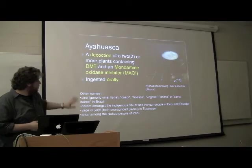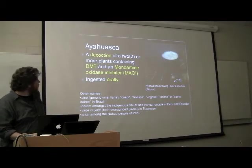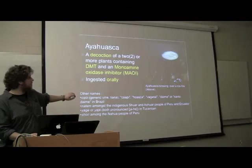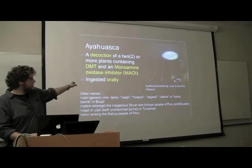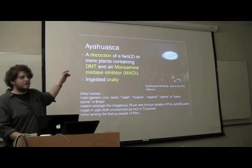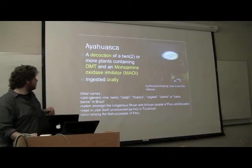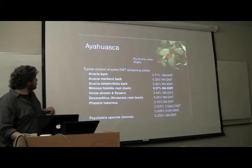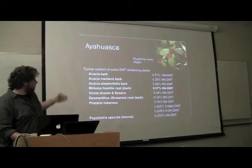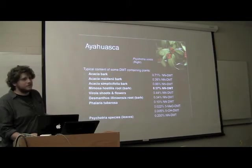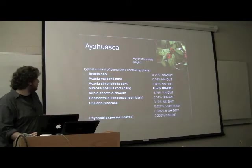These are just some other names for ayahuasca. It's brewed over very low heat — because remember, DMT boils away at around 60 to 80 degrees, very low temperatures. These are just some plants and their DMT content — we're almost getting up to 1% of plant material as DMT.